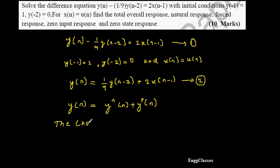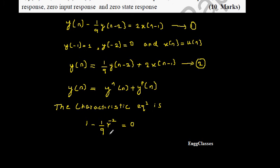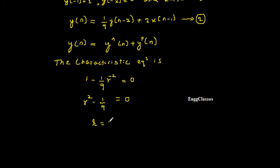Writing the characteristic equation is very important so that we can find the roots. The characteristic equation is 1 - (1/9)R^(-2) = 0. Multiplying through by R^2, we get R^2 - (1/9) = 0, which is a proper quadratic equation. From this, R^2 = 1/9, so R = ±1/3.